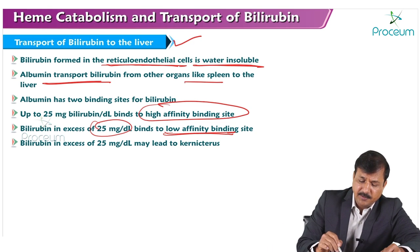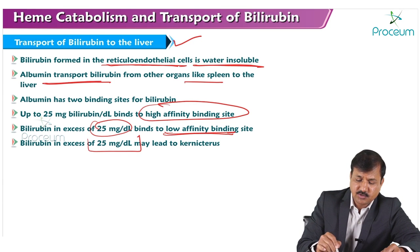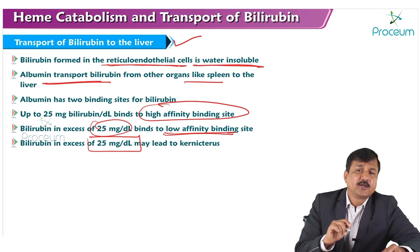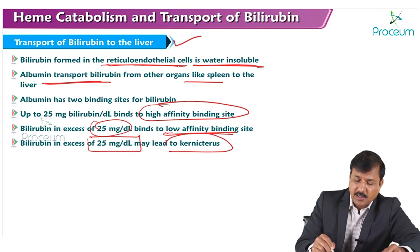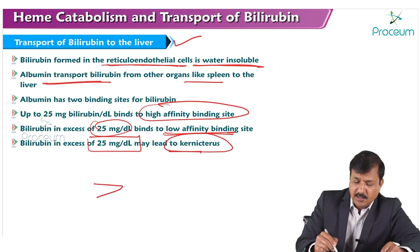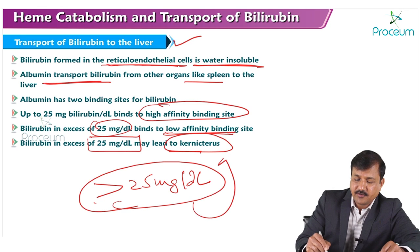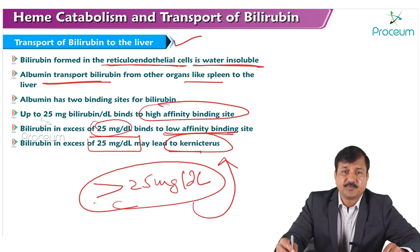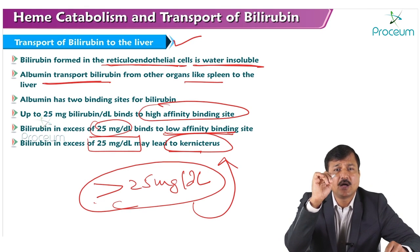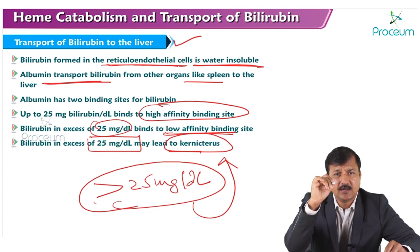Whenever unconjugated bilirubin levels exceed 25 milligrams per deciliter, it binds to the low affinity binding site and can cross the blood-brain barrier, leading to neurological issues referred to as kernicterus. Always remember: unconjugated bilirubin above 25 mg/dL carries a risk of kernicterus. This is how unconjugated bilirubin made in the spleen and bone marrow is carried to the liver by binding to albumin.